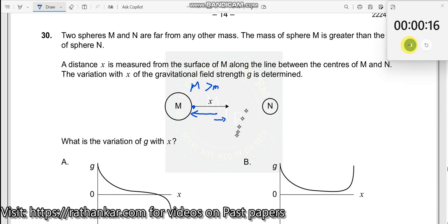At a particular point, the gravitational field due to capital M and the gravitational field due to capital N will be equal and opposite, so as a result the net gravitational field should be zero.